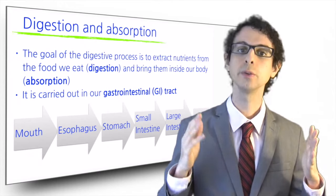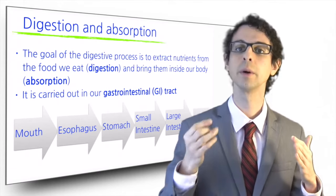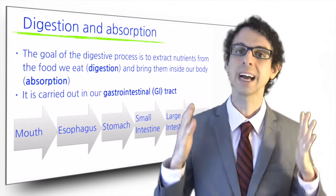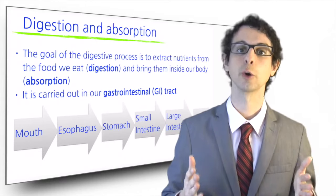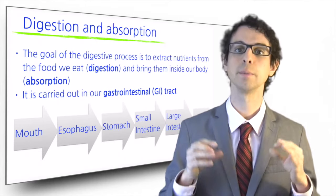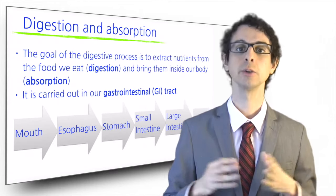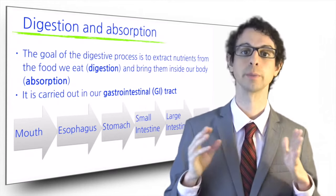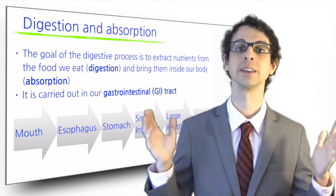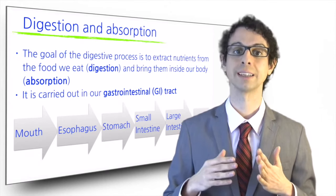From your point of view, the food you eat enters your body the moment you put it in your mouth. But anatomically, your digestive tract is still an external part. Nutrients really enter your body the moment they cross the membrane of your intestine during the process of absorption. Digestion and absorption occur in different steps in our gastrointestinal, or GI, tract.